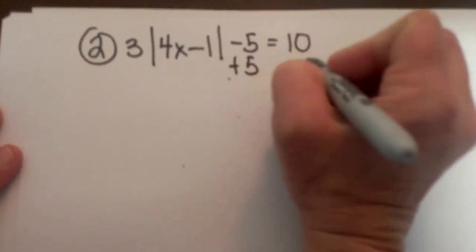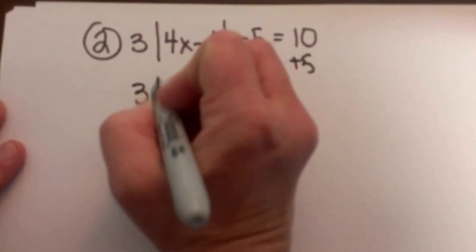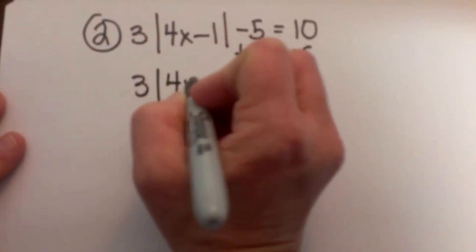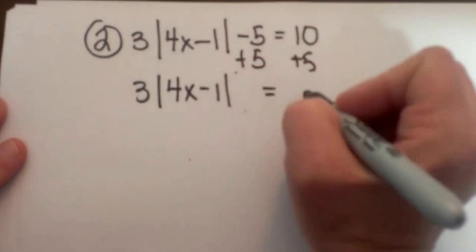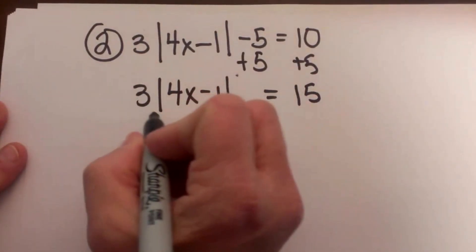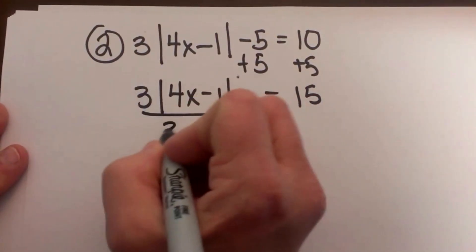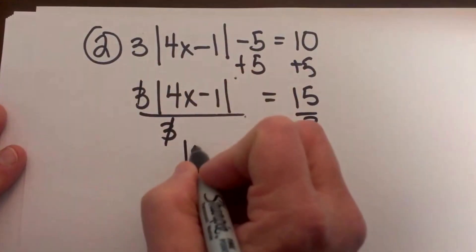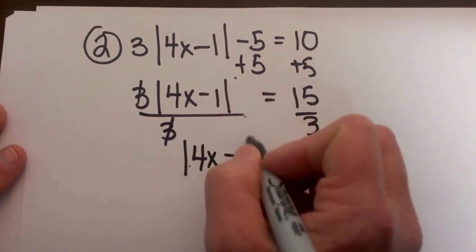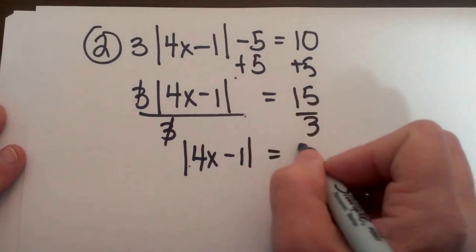We are going to add 5, so you get 3 times the absolute value of 4x minus 1 is equal to 15. We have to isolate the absolute value, so we are going to divide by 3, and we are left with the absolute value of 4x minus 1 is equal to positive 5.